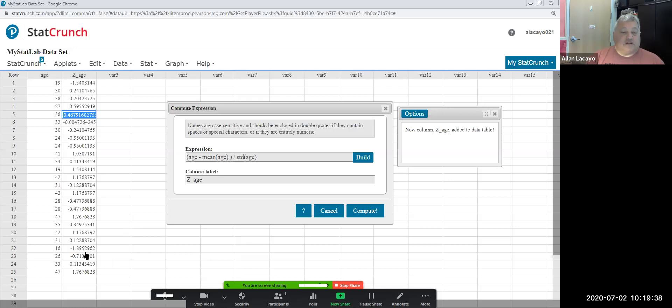Some z-scores are going to be super large negative, super large positive. That's because some people are super young by comparison to the average person or super old by comparison to the average person.